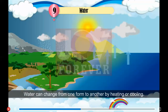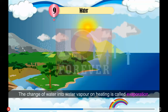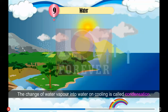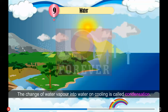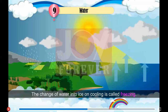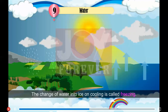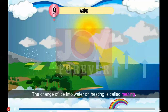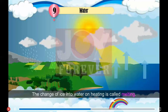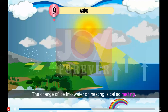Water is the only substance that is found naturally on earth in its three forms. Water can change from one form to another by heating or cooling. The change of water into water vapour on heating is called evaporation. The change of water vapour into water on cooling is called condensation. The change of water into ice on cooling is called freezing. The change of ice into water on heating is called melting.